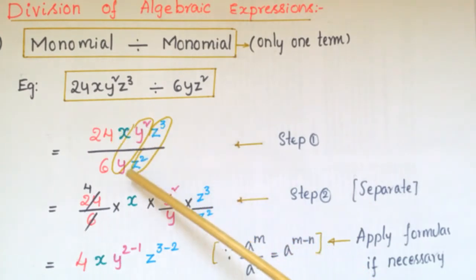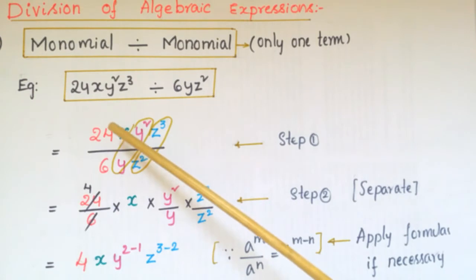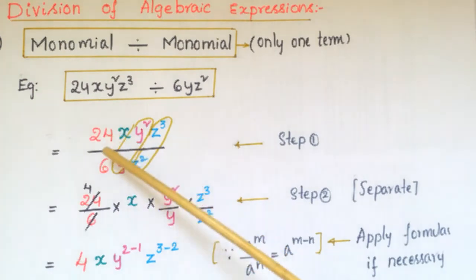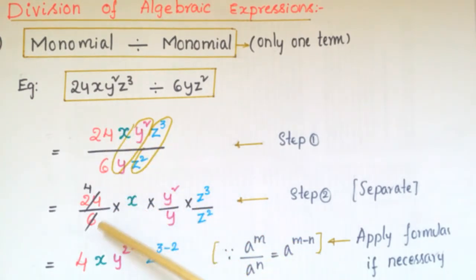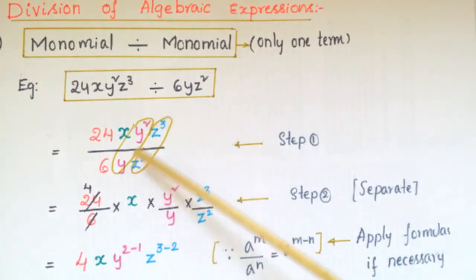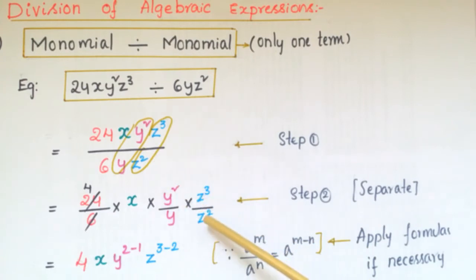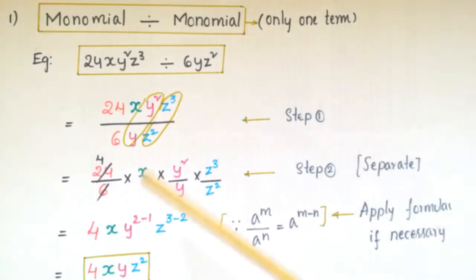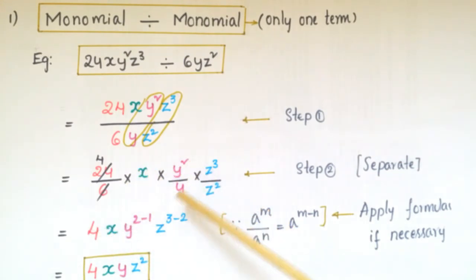In the first step, we write 24xy²z³ over 6yz², then separate the numerical values and the variables. So we get 24/6 times x times y²/y times z³/z².